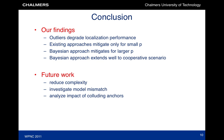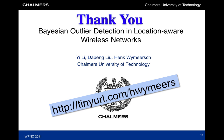To summarize, we have proposed a novel Bayesian outlier detection method for location-aware networks. This method outperforms existing methods, can easily be extended to a cooperative scenario, and achieves close to optimal performance. Future work includes the reduction of complexity, insensitivity to modeling assumptions, and the effect of colluding anchors. Thank you for your attention. Please also view our other videos on tinyurl.com.